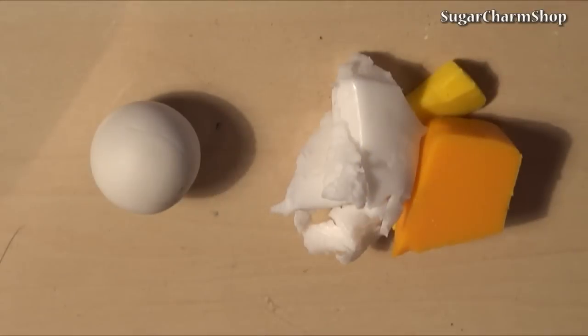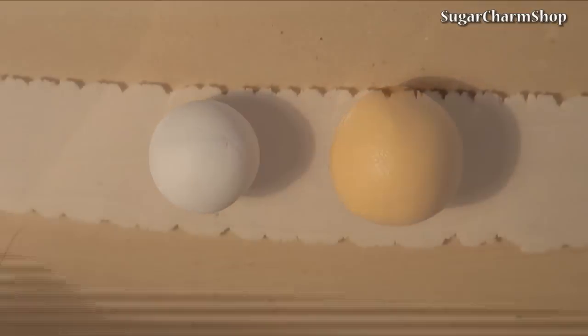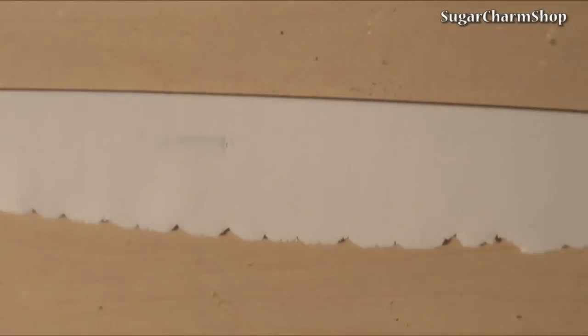For my first color I mixed orange, yellow and translucent. And for the second color I mixed white fimo and white cernit, just so that it's not 100% opaque.